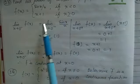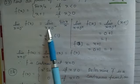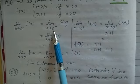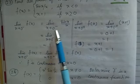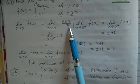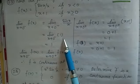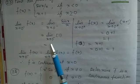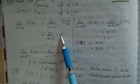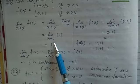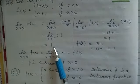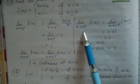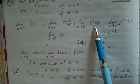So, limit as x tends to 0⁻ (left-hand limit) of sin(x)/x. We know that the limit of sin(x)/x as x tends to 0 equals 1. So the left-hand limit equals 1. Similarly, the right-hand limit: limit as x tends to 0⁺ of f(x)...